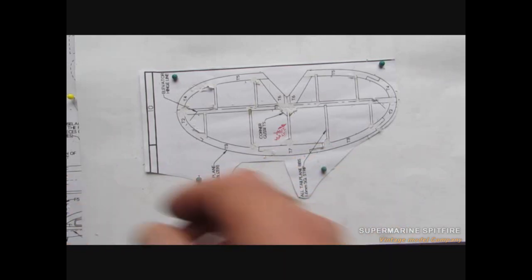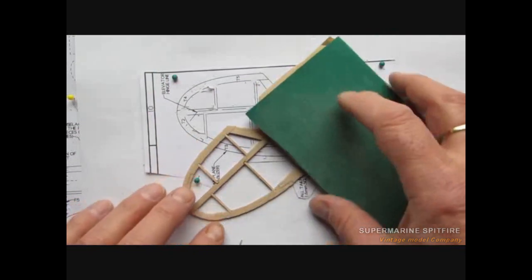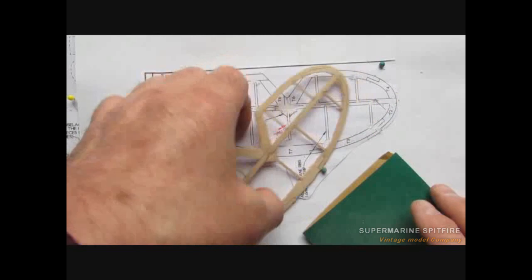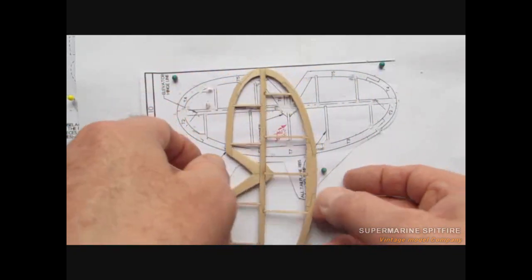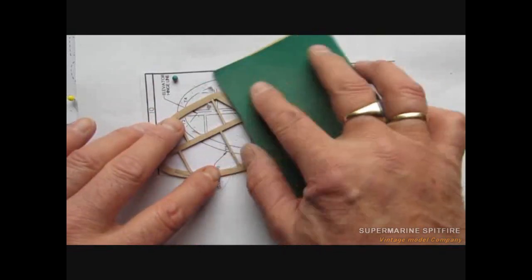Okay, so once we're happy that that's all dried, we can remove it from the board, give it a quick tickle with a bit of sandpaper. Not too much otherwise you're going to misshapen the edges and cause more harm than good. So just a quick tickle.